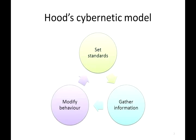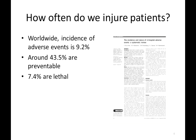When designing a regulatory system we need to think about what the components should be. Christopher Hood, professor of government at All Souls College in Oxford, offers a useful and simple model with three components that interact cybernetically. First, you set standards — you need to be clear about what standards need to be met. Then you gather information showing how well you're achieving them, and then you have a system that allows you to modify behaviour so that you meet the standards optimally. The evidence is that in healthcare we struggle in all three areas of Hood's model.